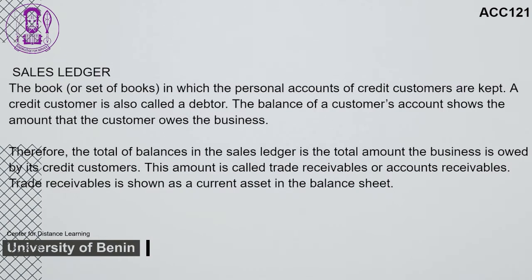The sales ledger is the book, or set of books, in which the personal accounts of credit customers are kept. A credit customer is also called a debtor. The balance of a customer's account shows the amount that the customer owes the business. The total balance in the sales ledger is the total amount the business is owed by its credit customers. This amount is called trade receivables or accounts receivables, shown as a current asset in the balance sheet.